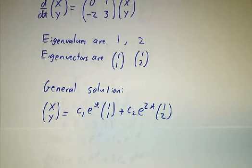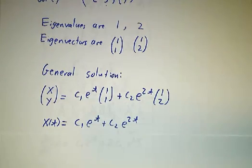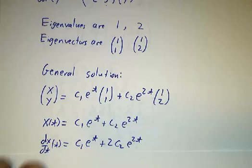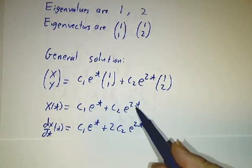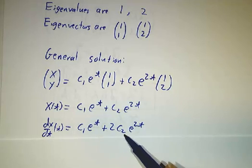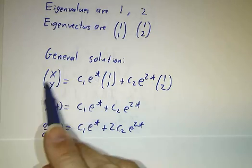Now of course, we never actually wanted to know about y, we wanted to know about x. So we just read off what x is, c₁e to the t plus c₂e to the 2t. And of course, y, well the derivative of e to the t is e to the t, the derivative of e to the 2t is 2e to the 2t. Or you could read it off from the second row of this equation.